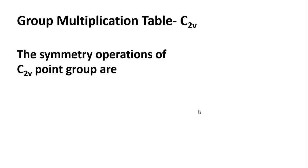Today we are going to discuss the group multiplication table for the C2V point group. The symmetry operations of the C2V point group are E, C2, σVxz, and σVyz.